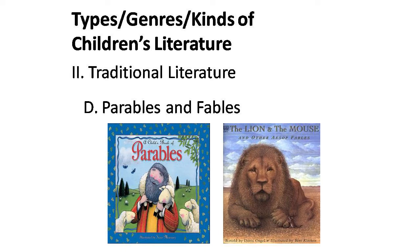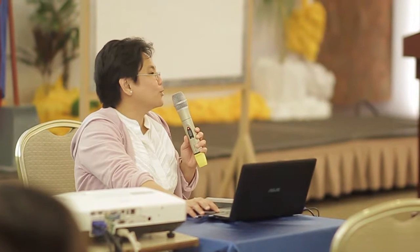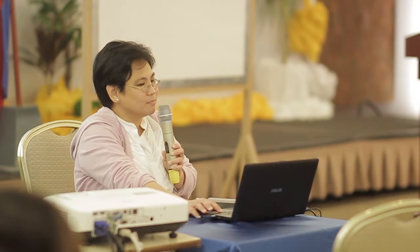There are different sub-genres for traditional literature: folk rhymes and songs, parables, fables, folk tales, fairy tales, myths and legends, and nursery tales. We have Filipino rhymes, riddles — mga bugtong. Some are like fables. Anansi is a spider — that's a folk tale from Africa.